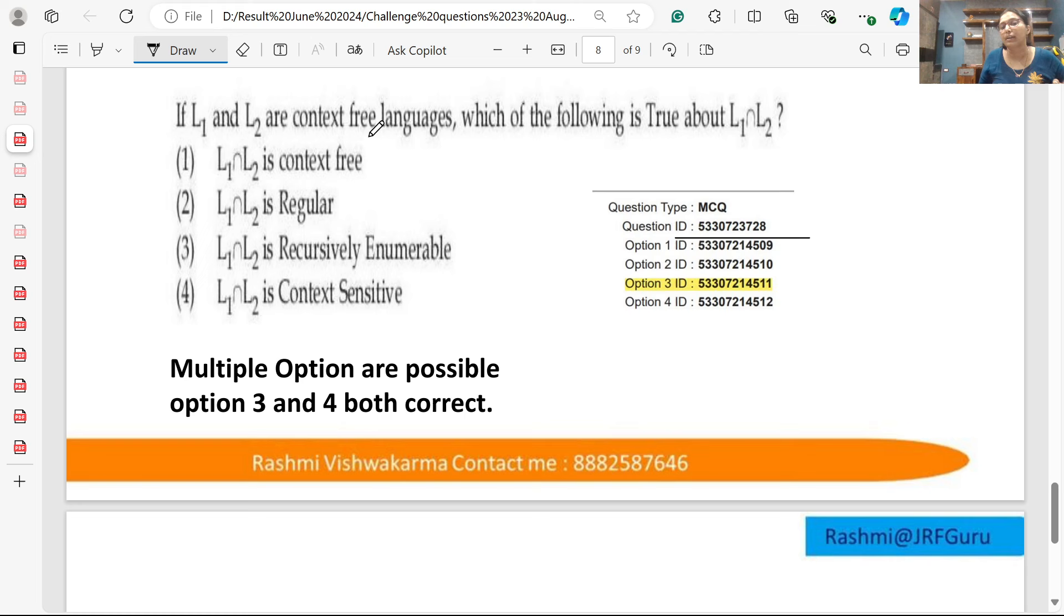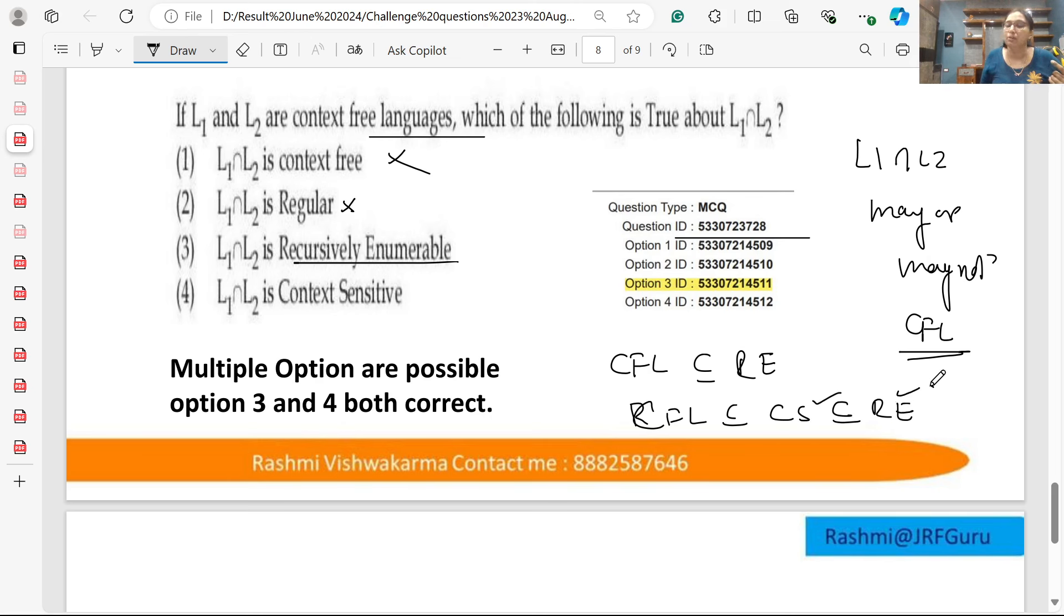Question number 728. If L1 and L2 are context-free, then L1 intersection L2—what do we say? It may or may not be context-free. So that's why the intersection is not irregular, but it is recursively enumerable. Now see, CFL is a subset of recursively enumerable, and CFL is a subset of context-sensitive, which is a subset of recursively enumerable. Both are under the intersection.